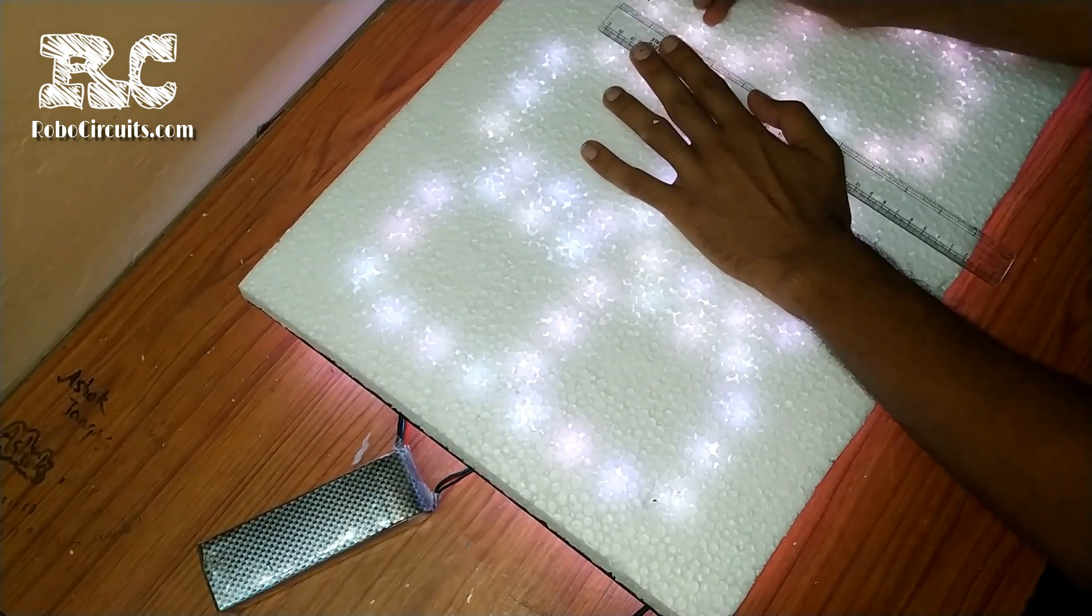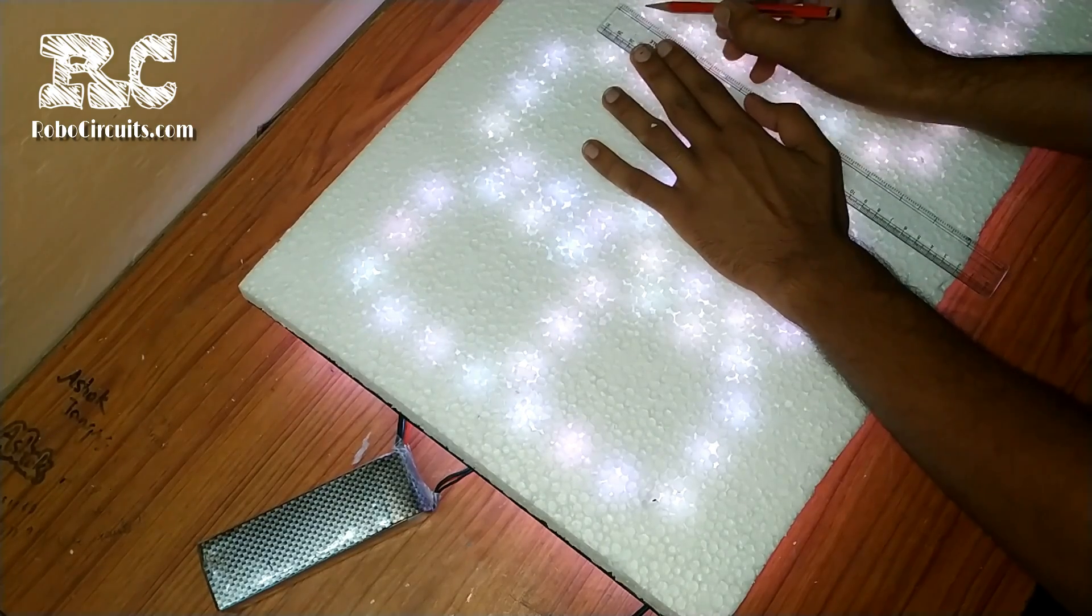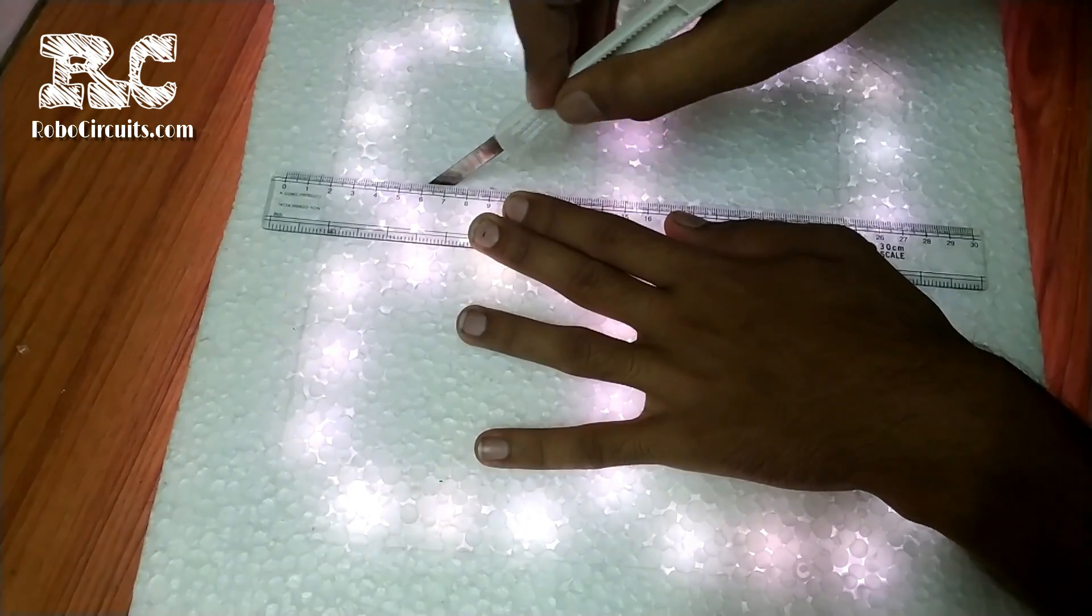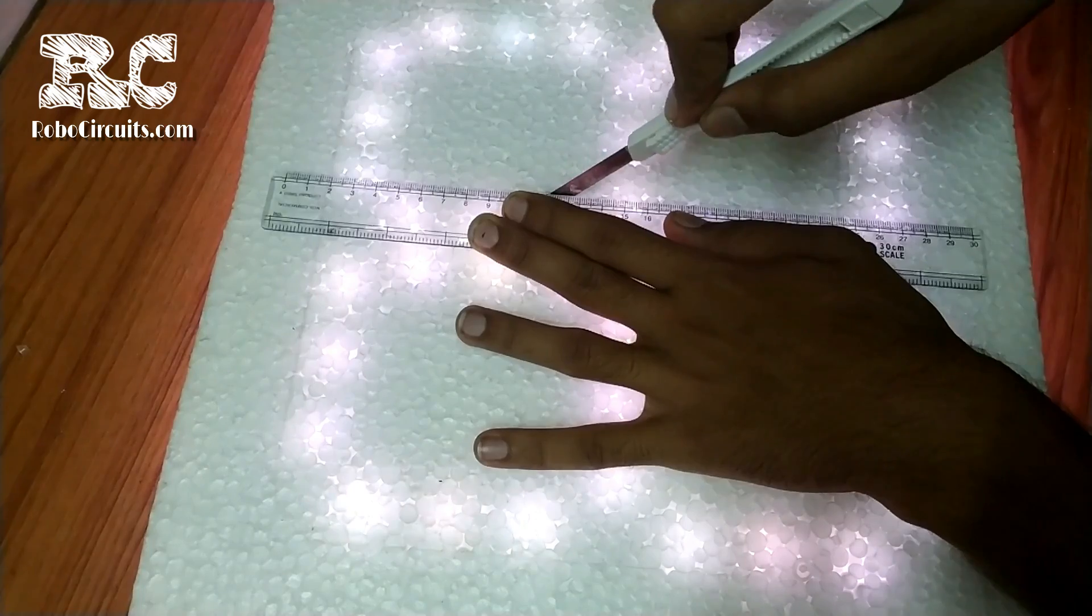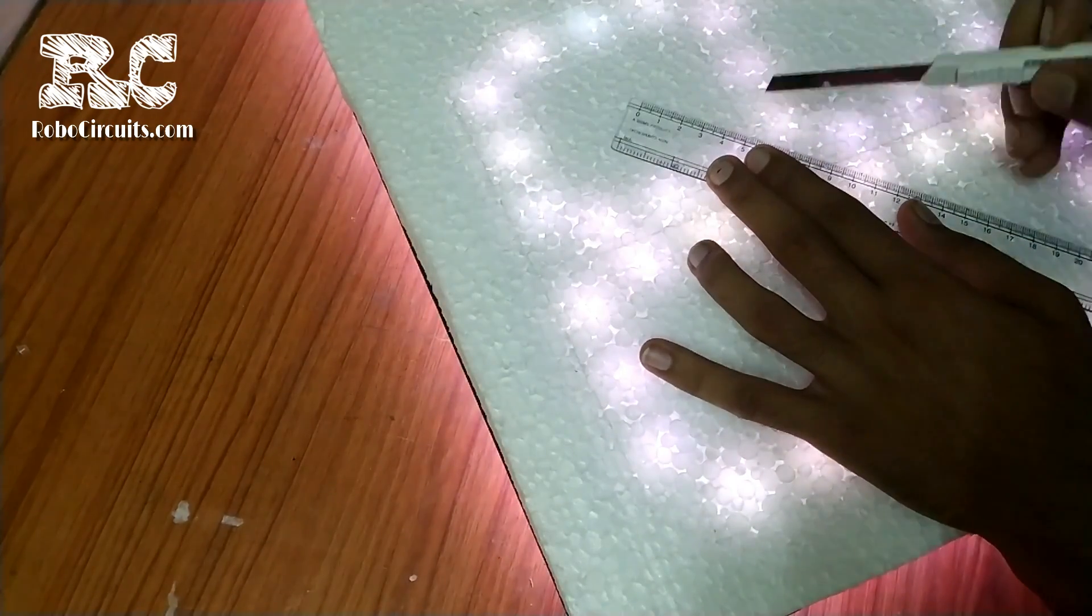I used a pencil and a scale to make linings on it. Then using a sharp cutter and a scale I cut all the digits as you may have seen in a seven segment display.